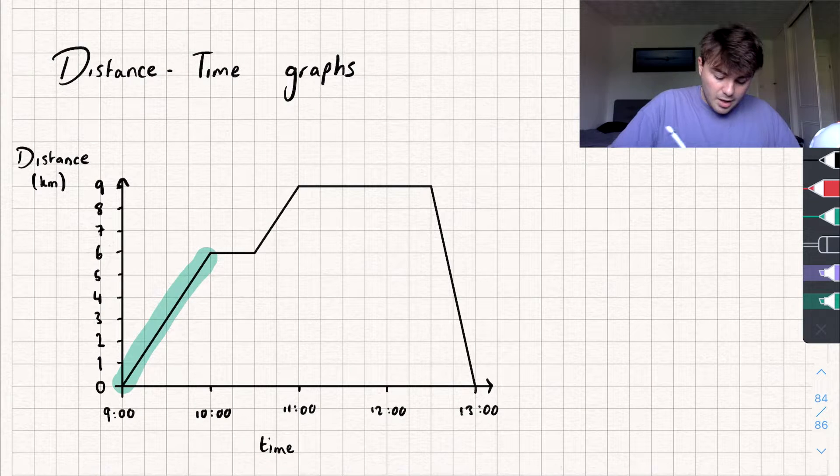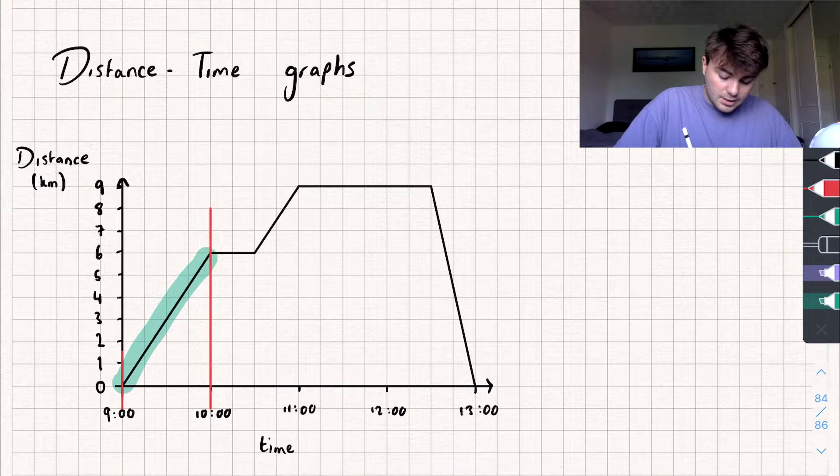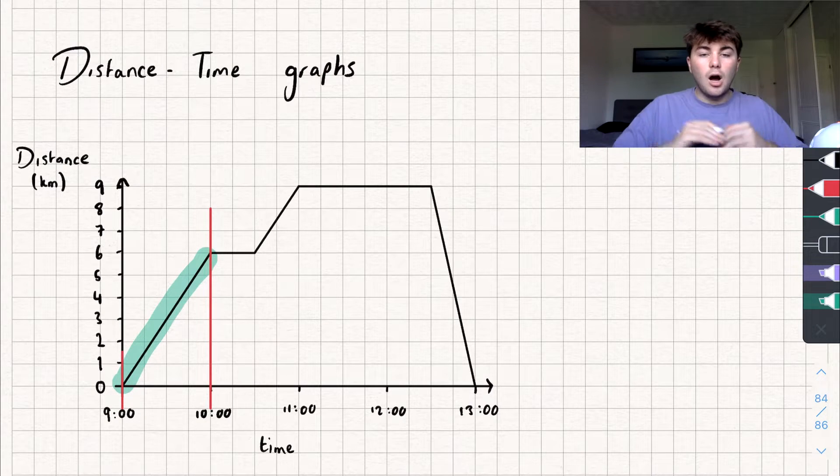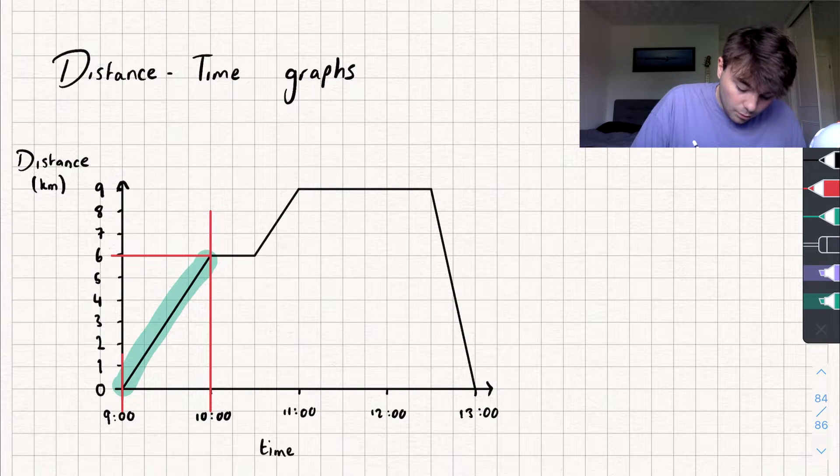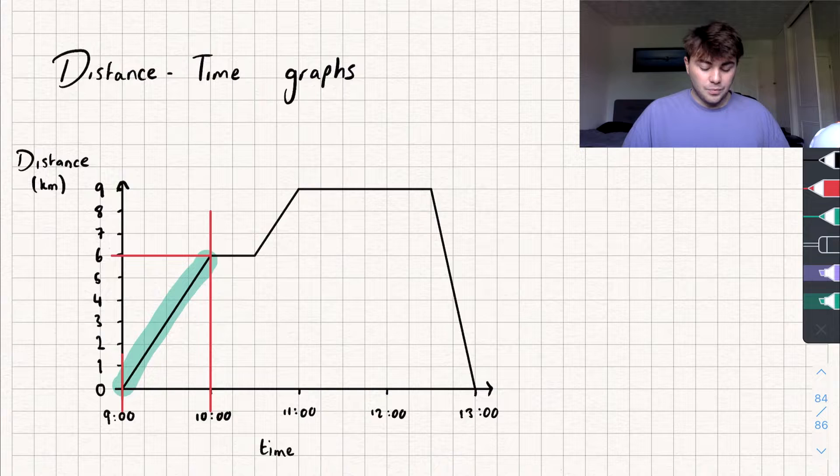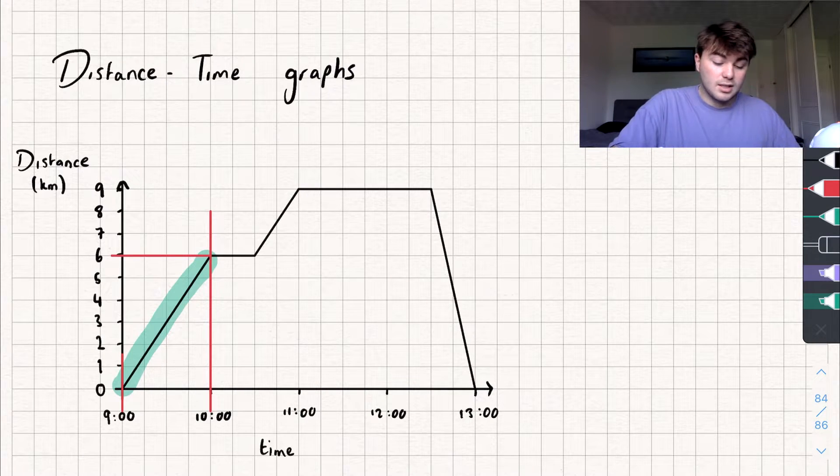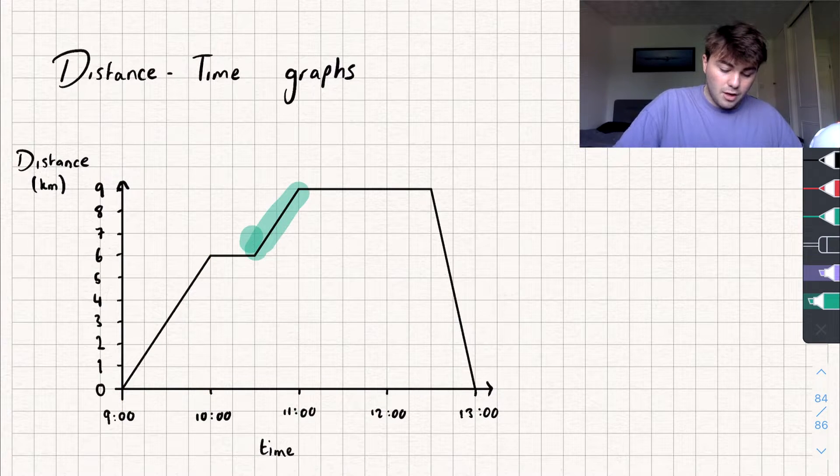If we look at this first line here, it starts at 9am and keeps increasing up until 10am. This shows me that between 9am and 10am, I was walking further away from where I started. If we look at the y-axis, I walked 6km. Between 9am and 10am, that's 1 hour, so in that hour I walked 6km away.